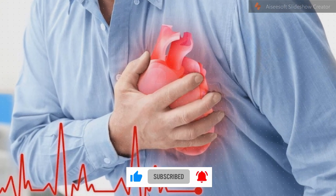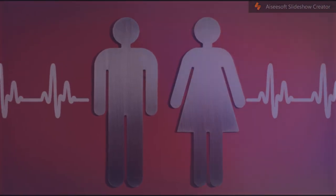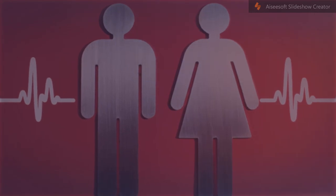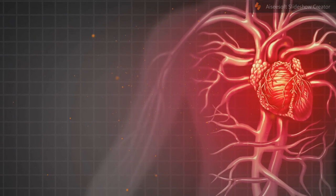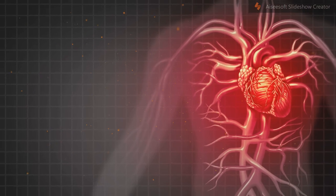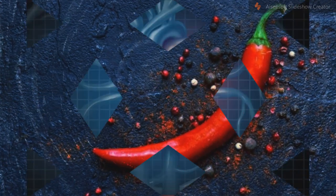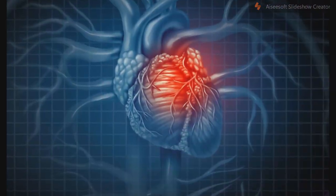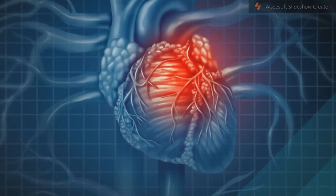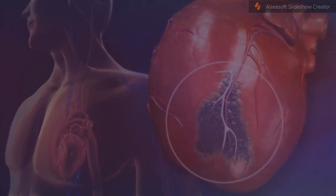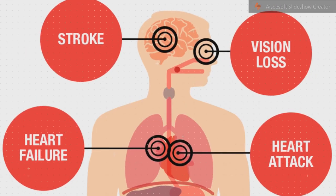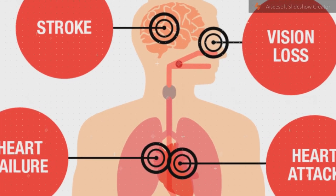Atherosclerotic disease is not the only cause of myocardial infarction, and it may exacerbate or contribute to other causes. A myocardial infarction may result from a heart with a limited blood supply subject to increased oxygen demands, such as in fever, a fast heart rate, hyperthyroidism, too few red blood cells in the bloodstream, or low blood pressure. Damage or failure of procedures such as percutaneous coronary intervention or coronary artery bypass grafts may also cause a myocardial infarction. Spasm of coronary arteries, such as Prinzmetal's angina, may cause blockage.